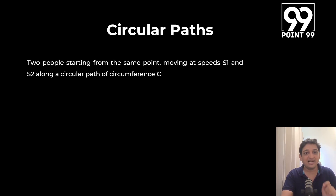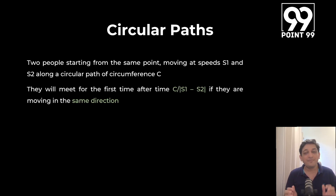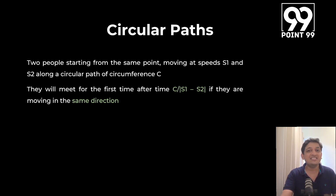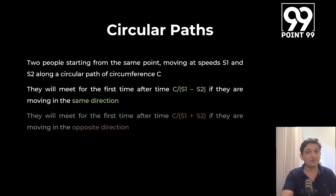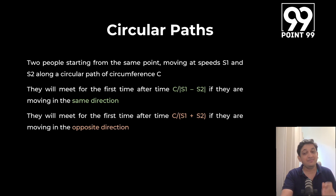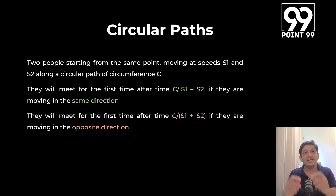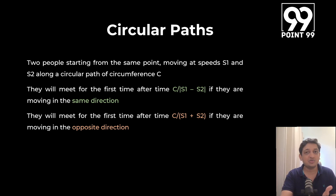Now for circular paths: if two people start from the same point at speeds s1 and s2 along a circular path of circumference C, they will meet for the first time after time C / |s1 − s2| if moving in the same direction, or after time C / (s1 + s2) if moving in opposite directions. Both people work on different parts of the circular track and when they meet, cumulatively they have covered the full circumference — this connects directly to the relative speed concept.